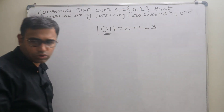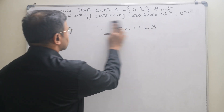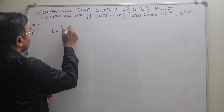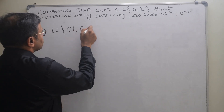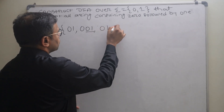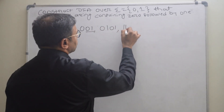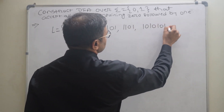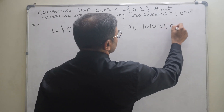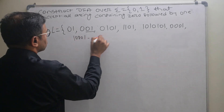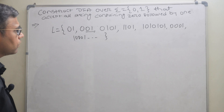Now we have the number of states. Before constructing the DFA, I will write all possible valid values. The language L includes: 01, 001, 0101, 1101, 10101, 0001, 10001, and so on. These are some of the valid strings we need to accept.